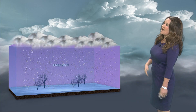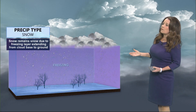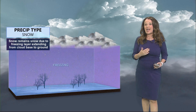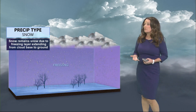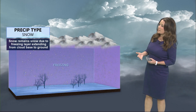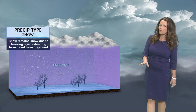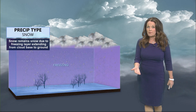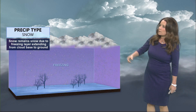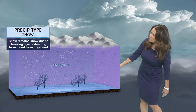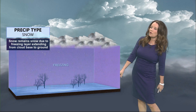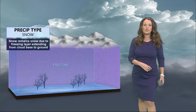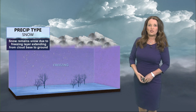With snow, most of the column of air is at or below the freezing mark. We can still have temperatures at the surface that are several degrees above the freezing mark, but most of the column of air has to be below or at the freezing mark for that snow to make its way to the surface.